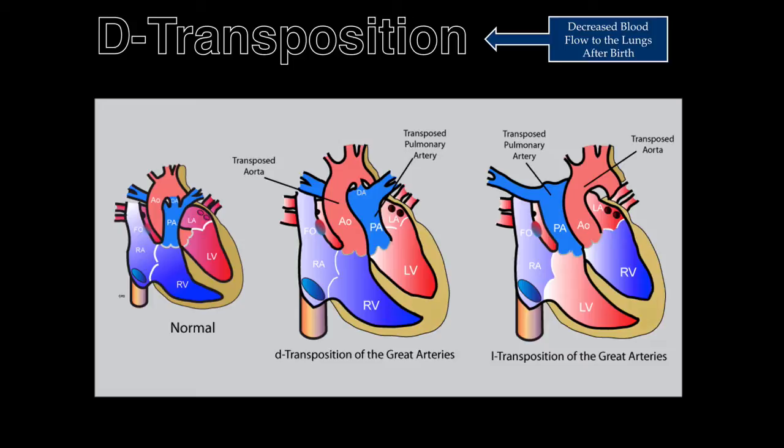The morphologic right atrium connects to the morphologic left ventricle that connects to the transposed pulmonary artery. While abnormal anatomy occurs with L-transposition, this defect is not a surgical emergency following birth. Because of the acute neonatal hemodynamic consequences of D-transposition, we will illustrate this abnormality in the next slides.